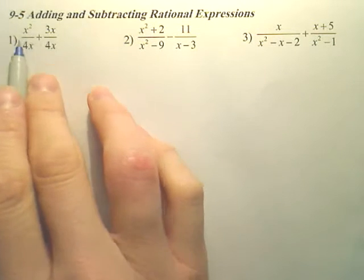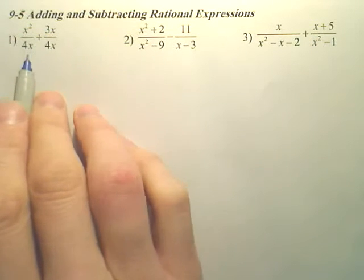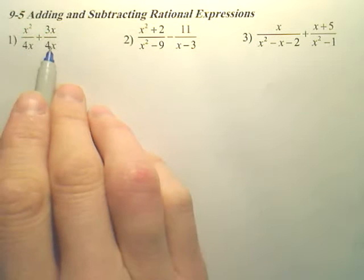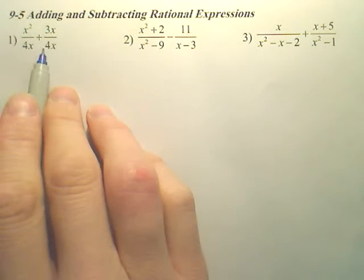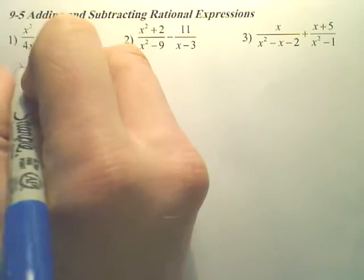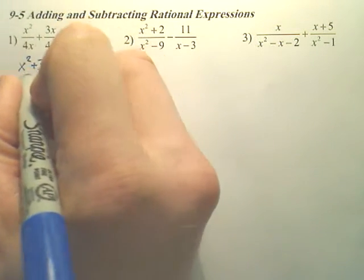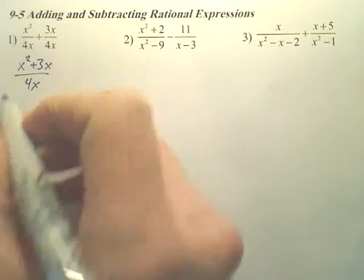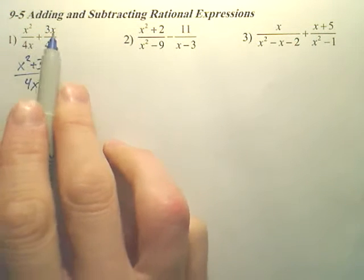For number one, if I want to add these two, I need to get a common denominator. Now what you'll notice is I already have a common denominator, so it's actually a really simple problem. All you do is add the tops and leave the bottom. You leave the bottom and add the tops.